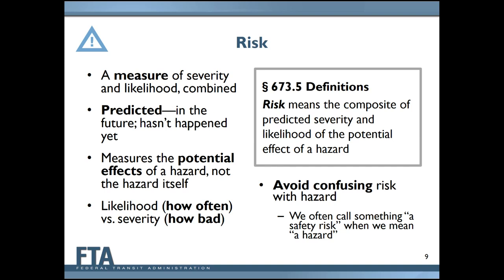It's also important to note that risk is about the future. The term risk involves predicted severity and predicted likelihood — as opposed to actual severity and actual likelihood — because we're providing our best prediction, hopefully based on great available data, about what could happen in the future, how often it could happen, and how bad it could get. Thinking about the future is an important part of what makes SRM and safety risk assessment proactive in addressing safety.